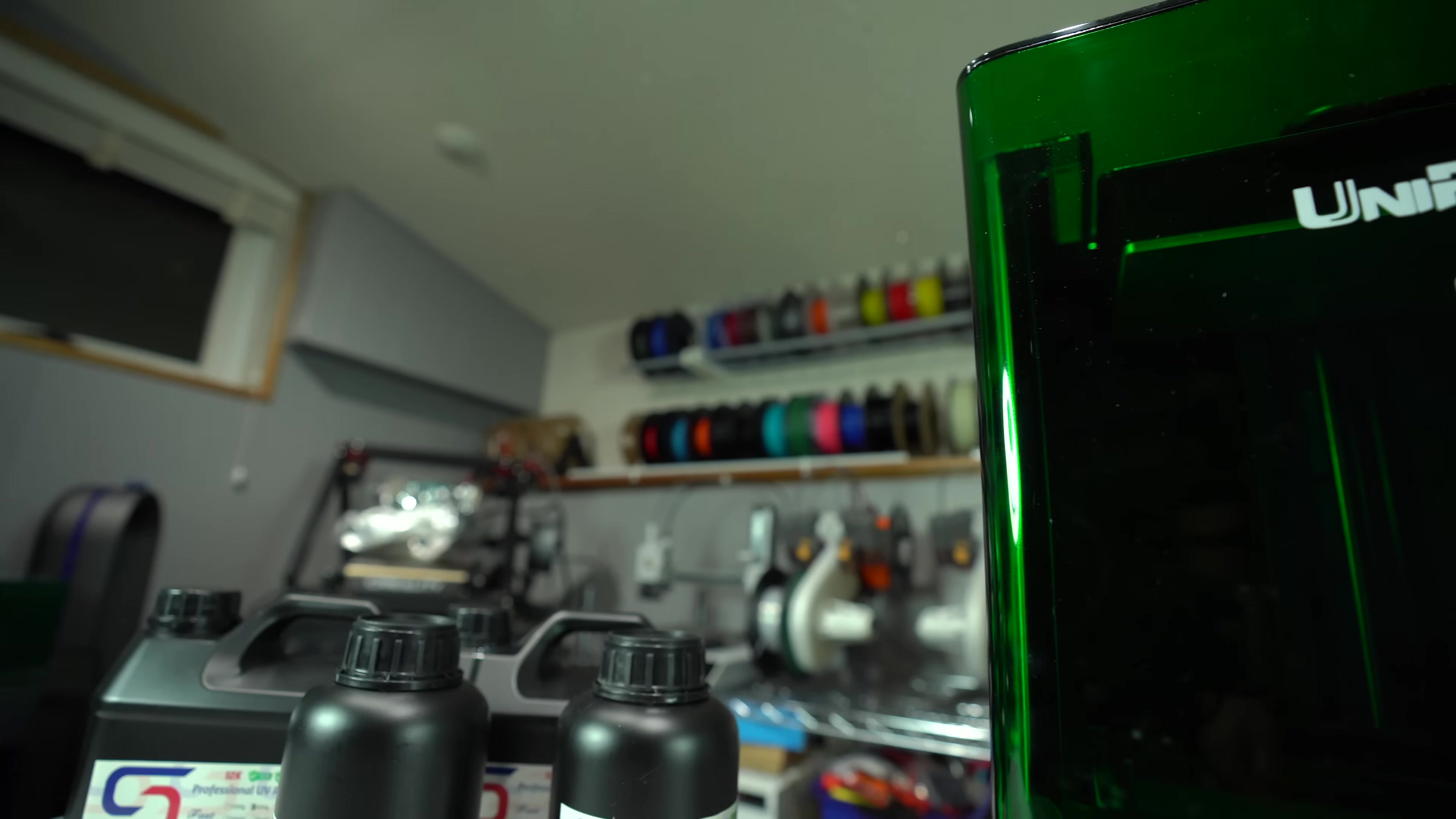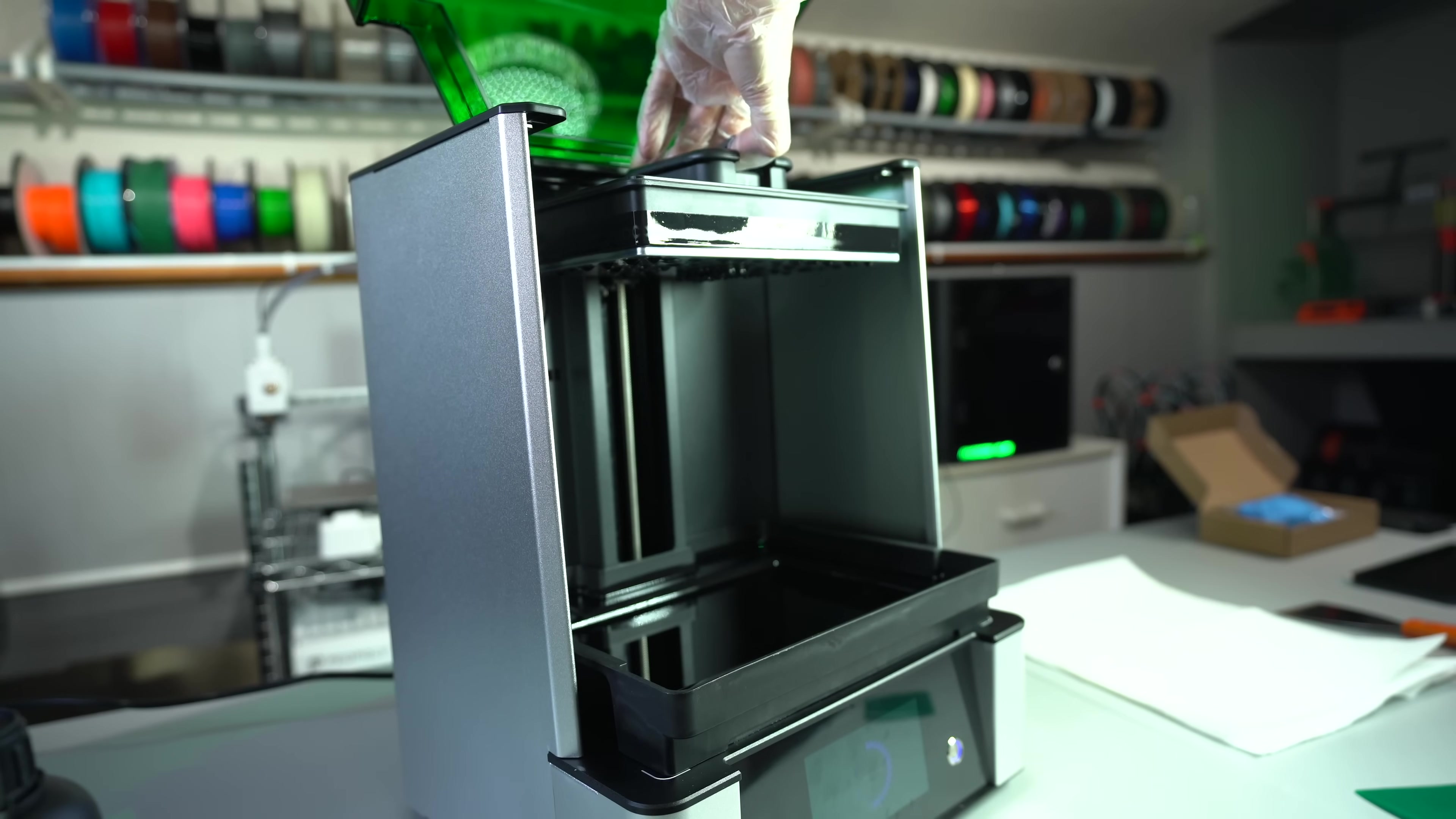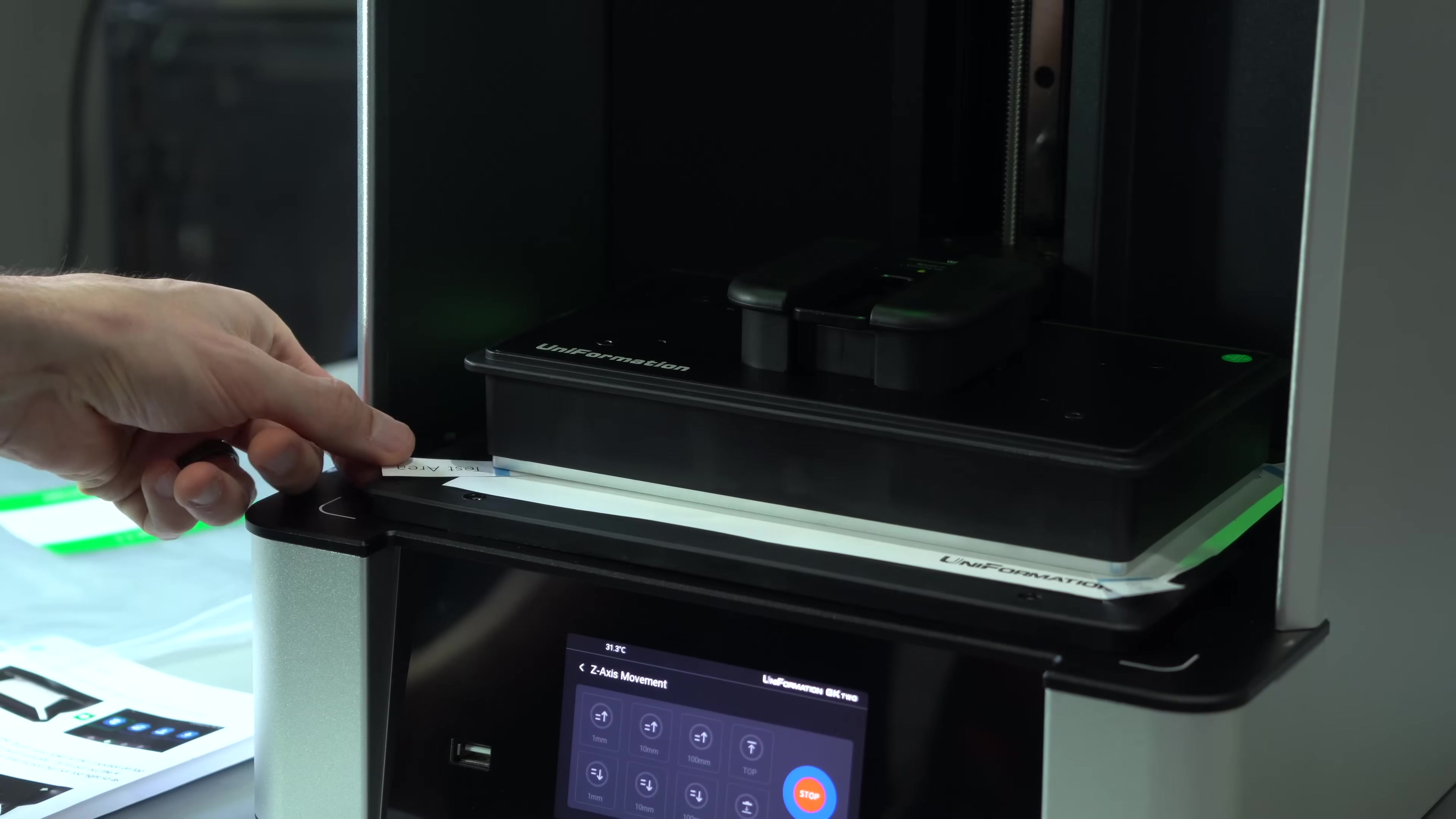Where the GK2 really differentiates itself is in the value-added features. It has a flip-up lid, allowing it to be pivoted out of the way without needing to be removed entirely. The build plate comes factory-level and has a quick-release mechanism for easy installation and removal. A step is included in the assembly guide to ensure the build plate is properly leveled and nothing's shifted in transit, but this is just for verification.